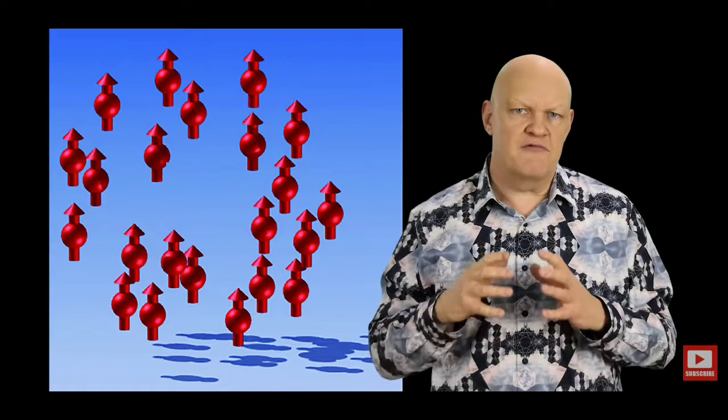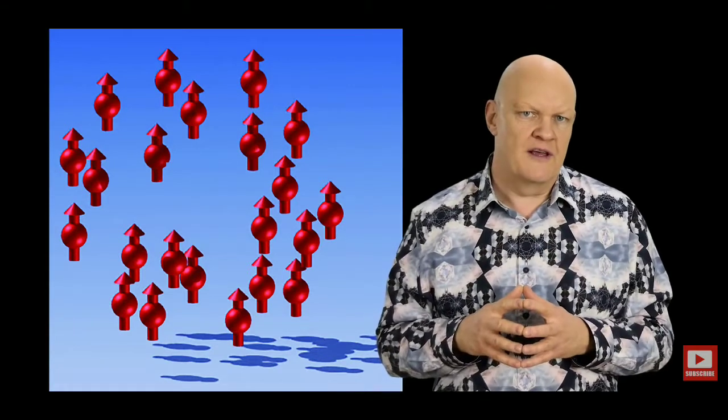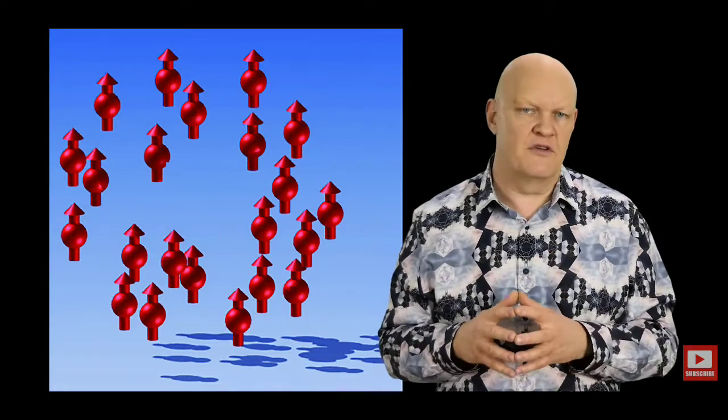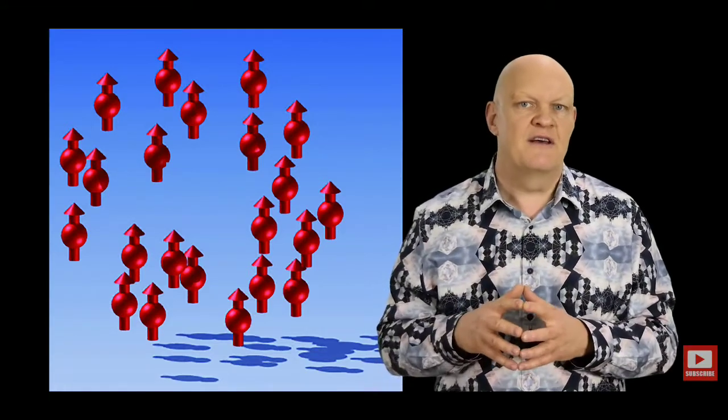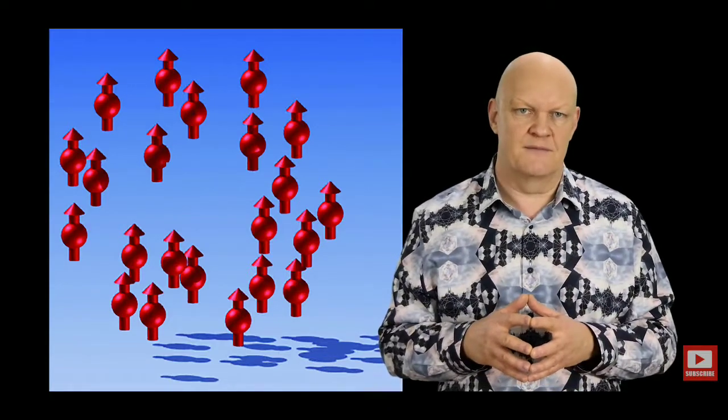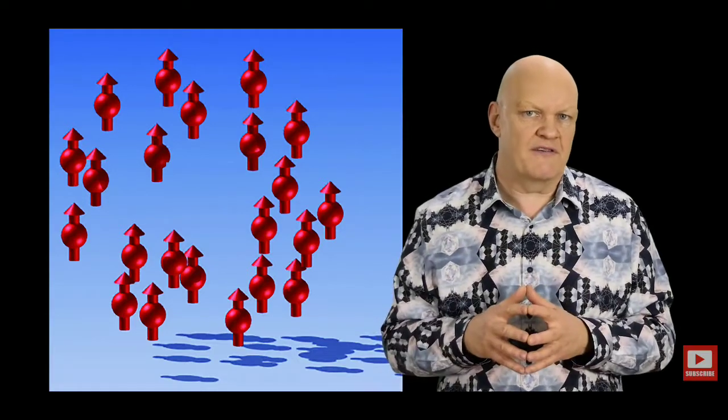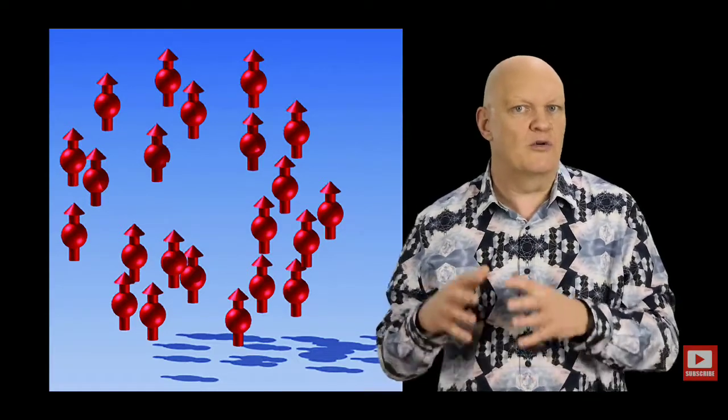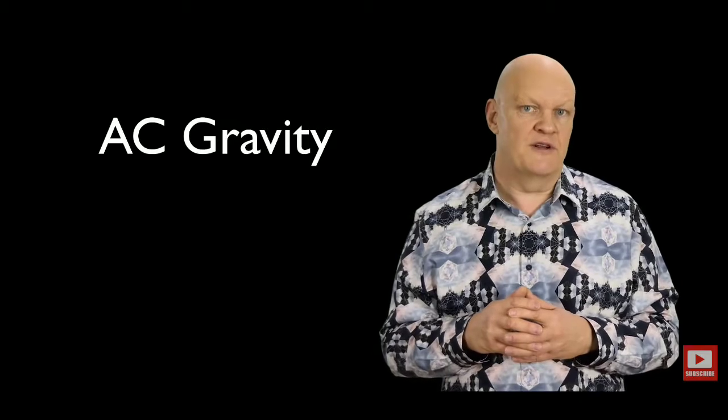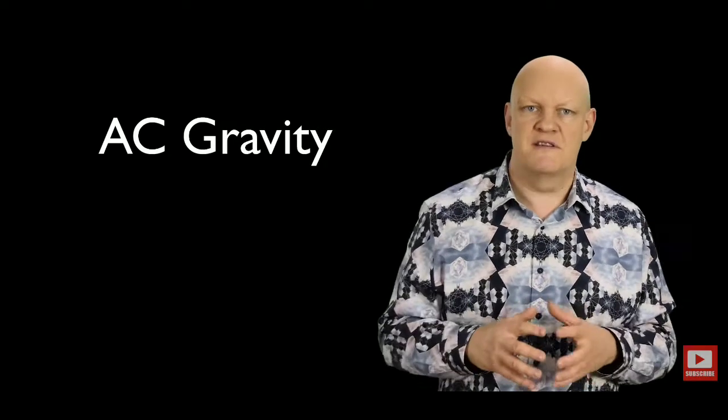As each ion would spin rapidly, it would create a tiny gravitational field. However, because all the ions from the Bose-Einstein condensate would be aligned together, the effect would be magnified by the billions of ions in the disk. The theory is that this would create a gravity-like field that could either increase or decrease the effect of gravity, which Ning Li called AC gravity because it could either be attractive or repulsive in nature.